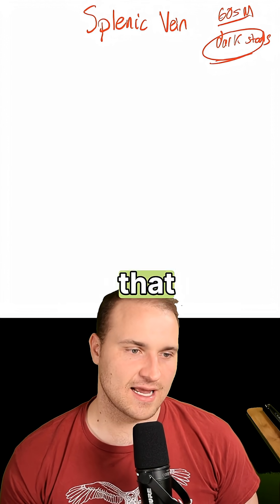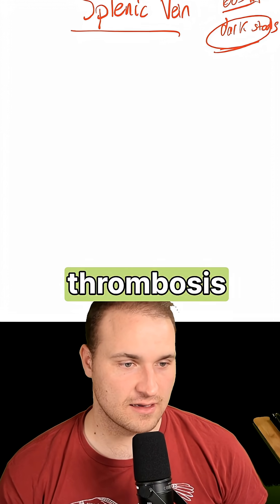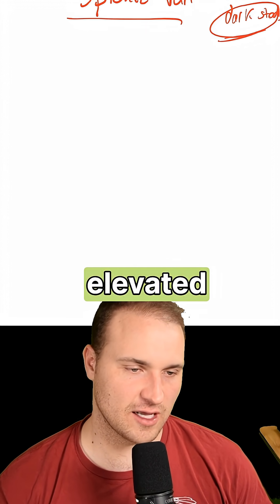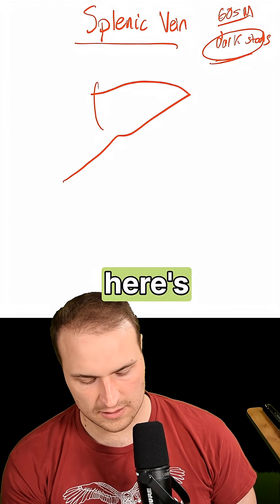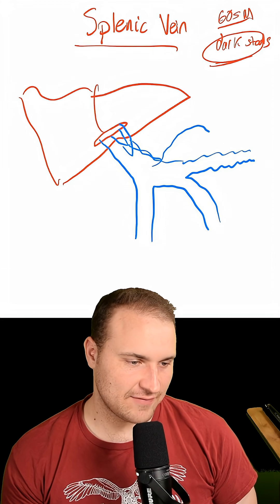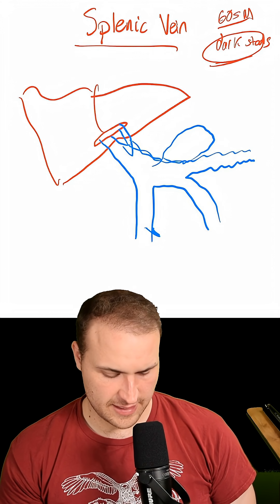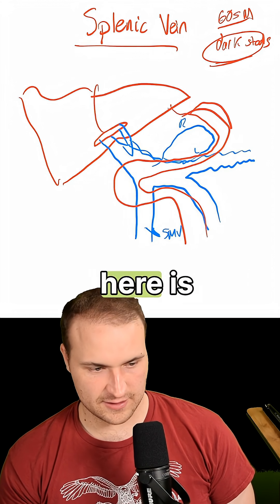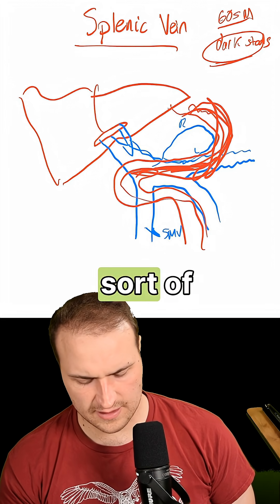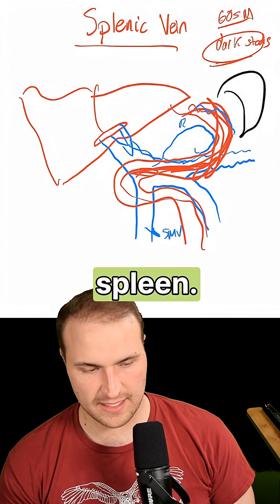Chronic pancreatitis can lead to splenic vein thrombosis, and the gastric varices are associated with elevated pressure in the drainage veins. Here's our liver, the left gastric vein going into the right gastric vein. This is the superior mesenteric vein, and here is the fundus of the stomach with some fundal varices, and then our spleen.